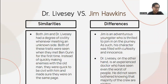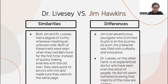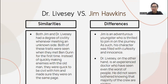For the second similarities: both Jim and Dr. Livesey had a degree of civility whenever meeting an unknown person — a trait not commonly seen nowadays. Both of these traits were seen when they met Ben Gunn for the first time. Instead of quickly making enemies with the unknown old man, they were quick to be civil with him, keeping everything peaceful and ensuring they were on the same page without misunderstandings or needless violence.